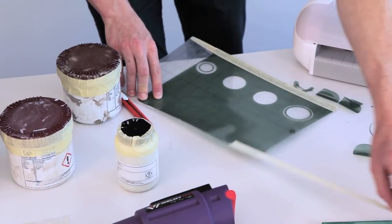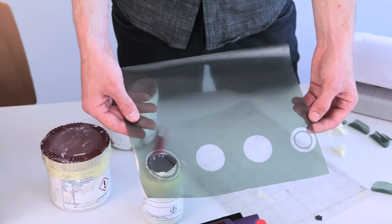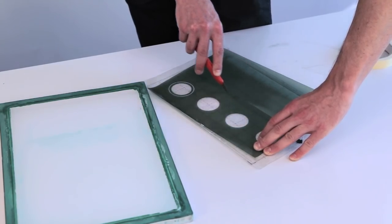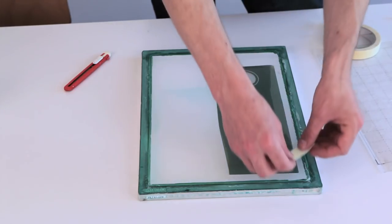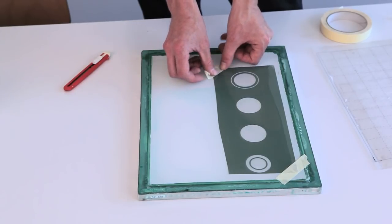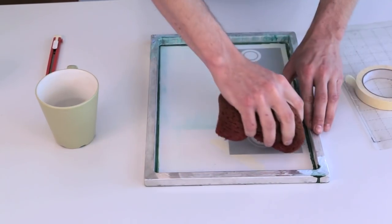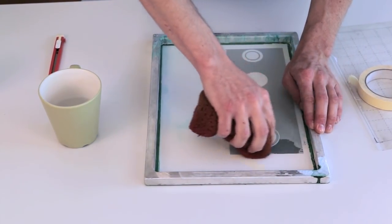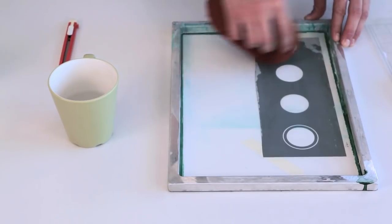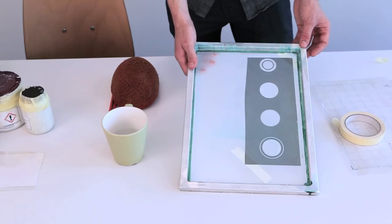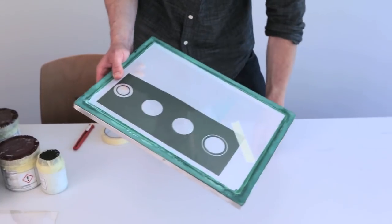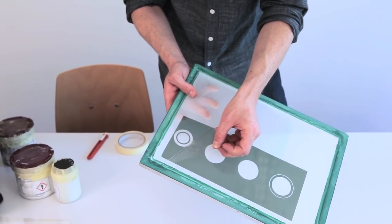Once you've cut out the design, you can apply it to the screen. Place some masking tape to ensure that it stays in place. Use a sponge to apply water across the screen. You'll be able to see where it's adhered correctly. Once the film is adhered and dried, you can remove the contact sheet.